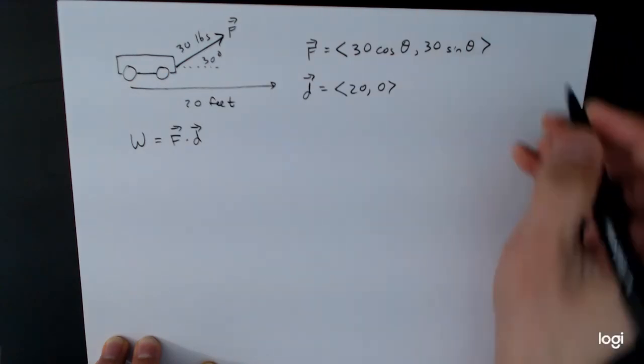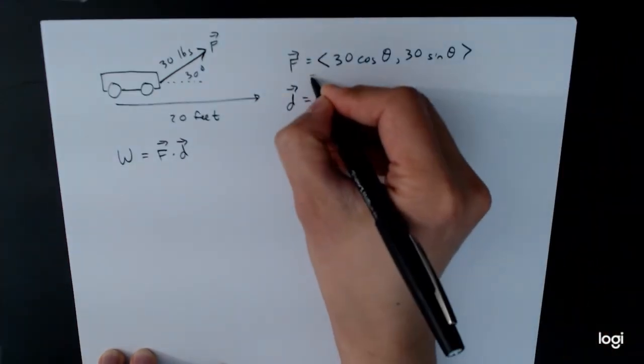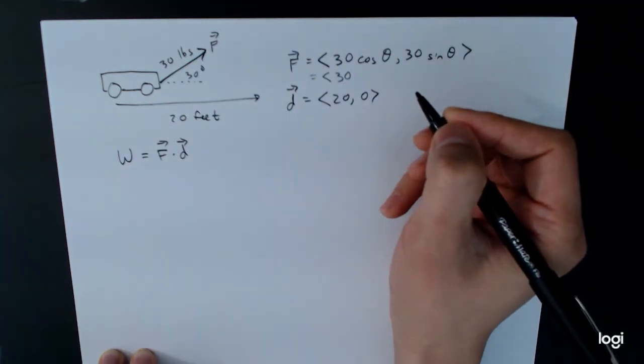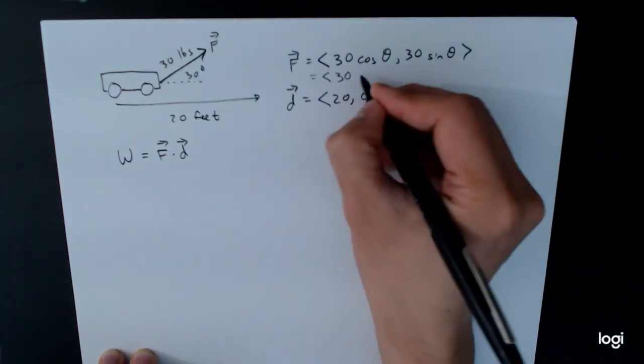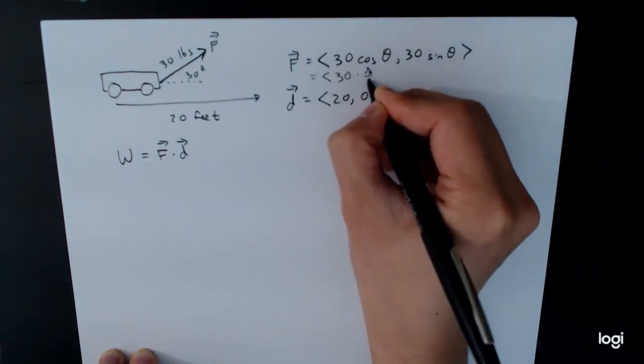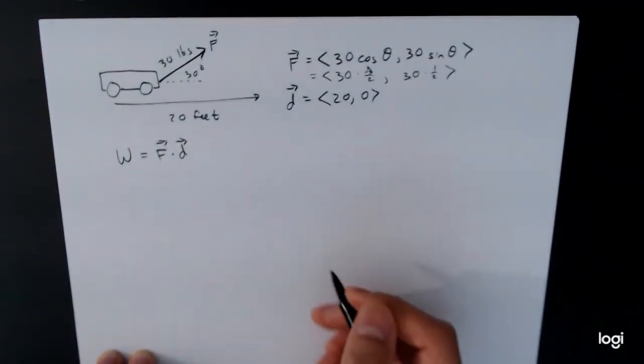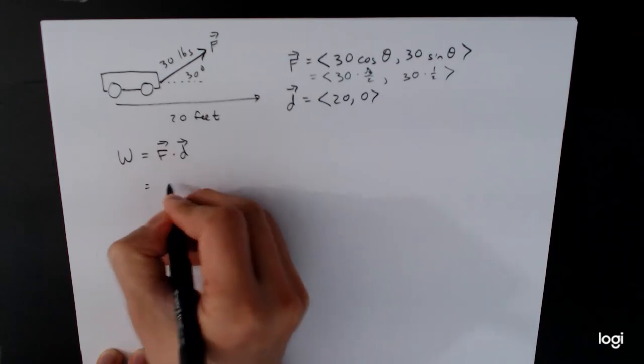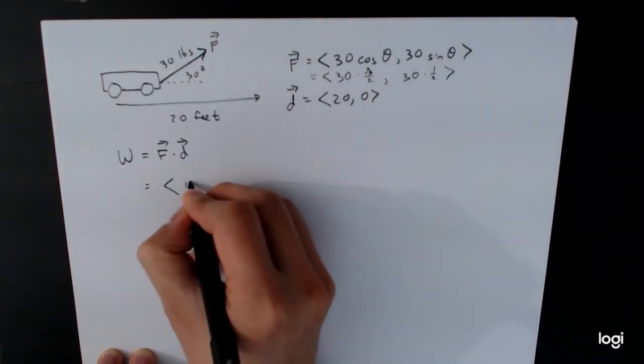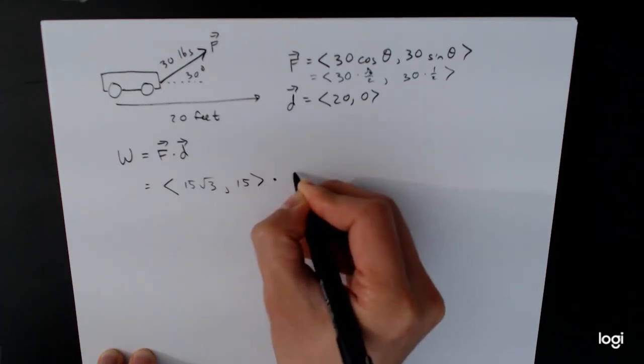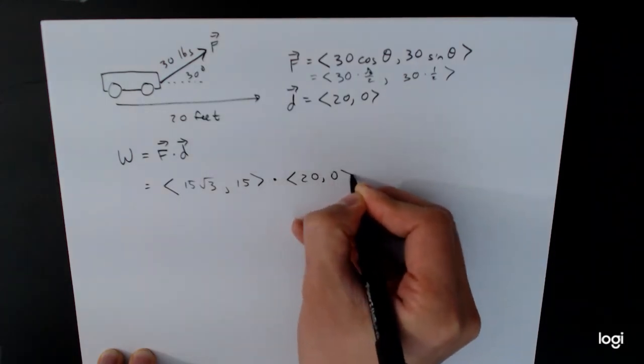In this case that angle is 30 degrees. And so this is going to be 30 times cosine of 30 degrees. Cosine of 30 degrees is going to be square root of 3 over 2. And then sine of 30 degrees is 1 half. And so this will give us the formulas that we need. So 15 square root of 3, comma, 15, dot, 20, comma, 0.